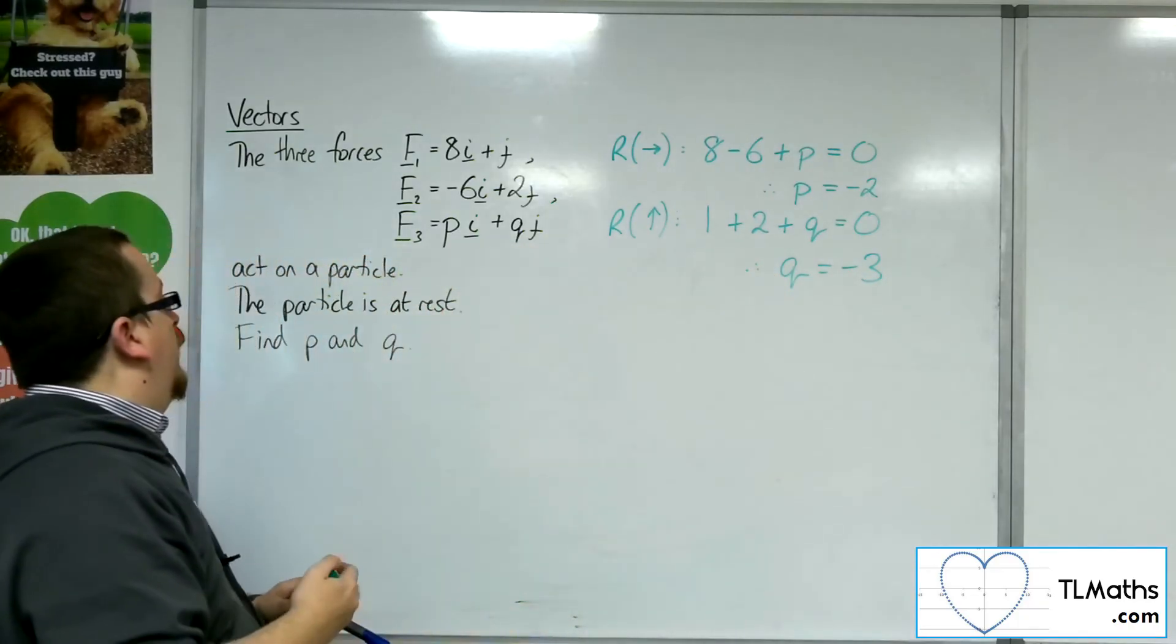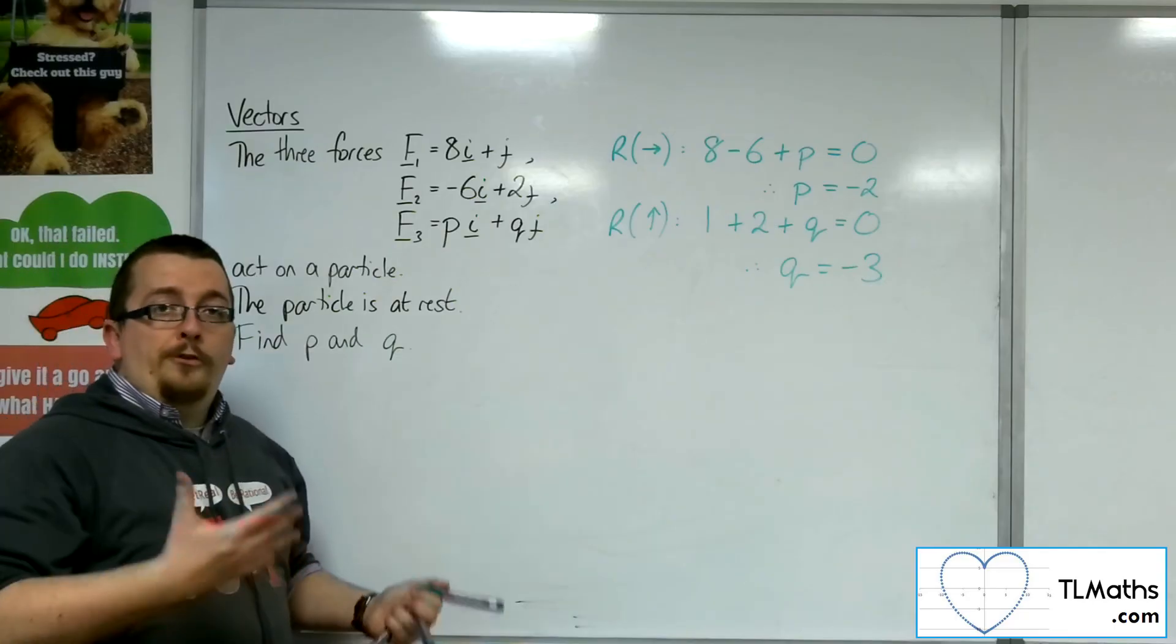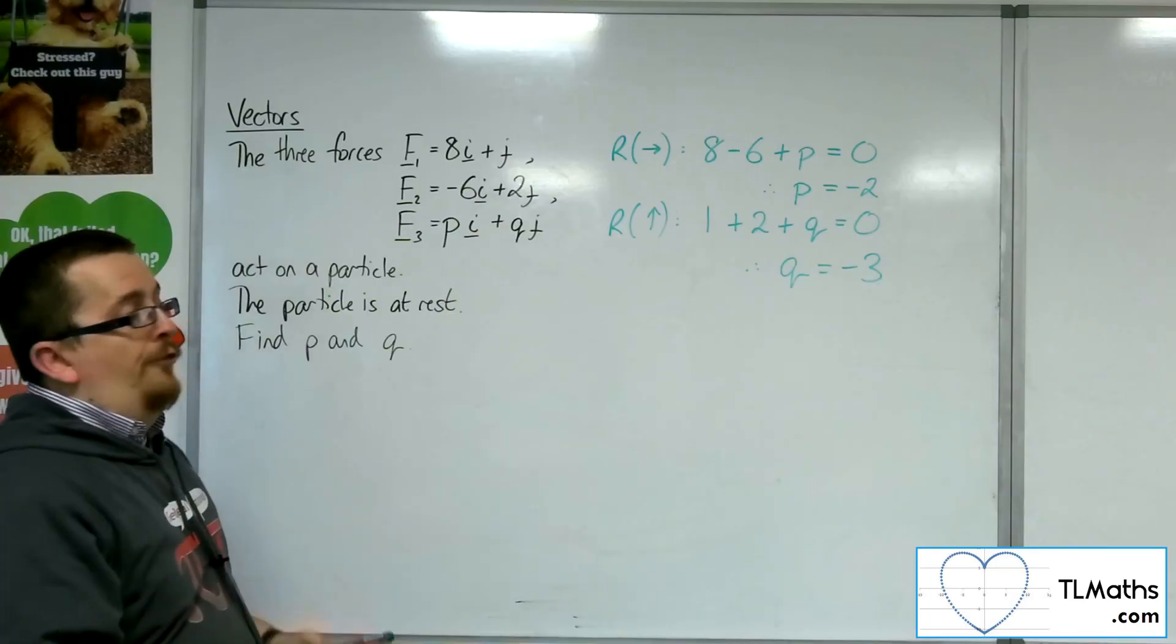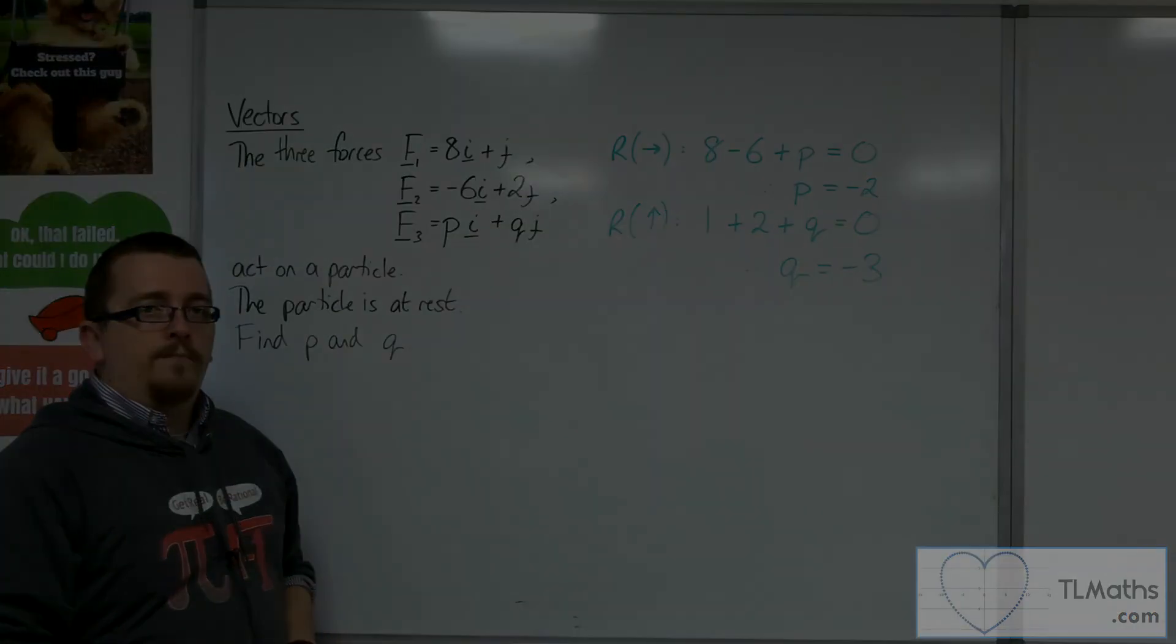So there is p, and there is q. Okay, so in order for these three forces to balance, and to end up with a resultant force of 0, p would have to be minus 2, and q would have to be minus 3.